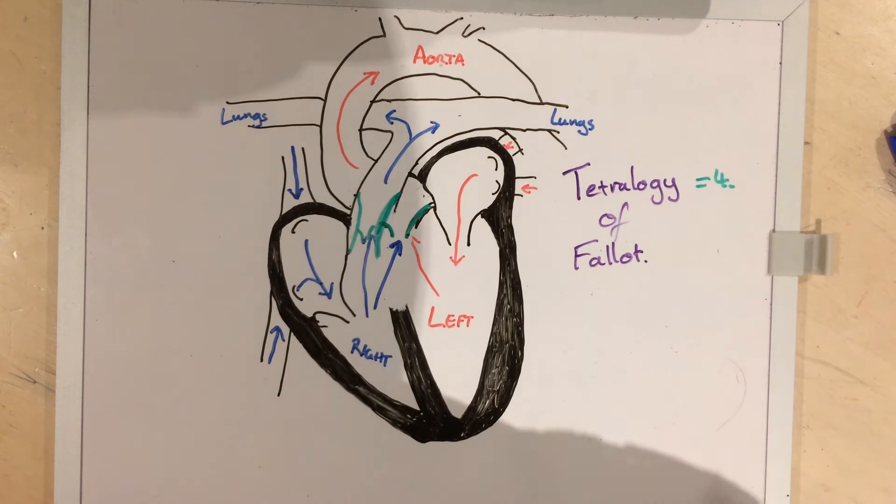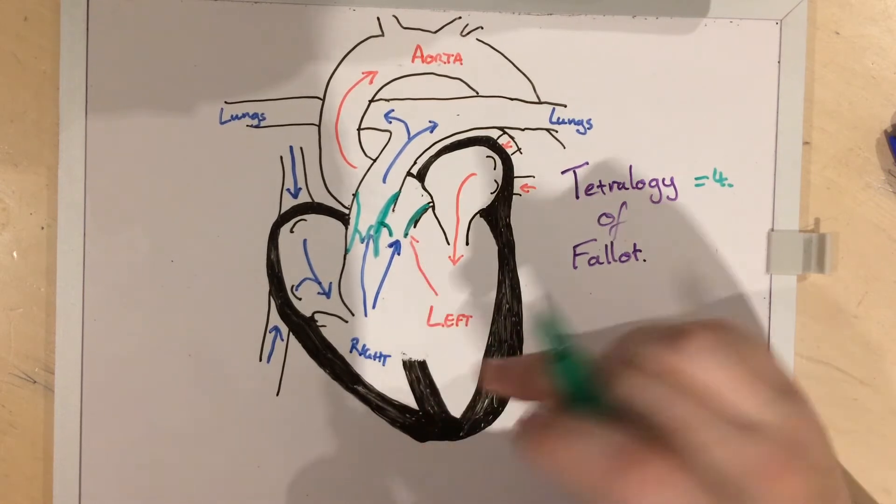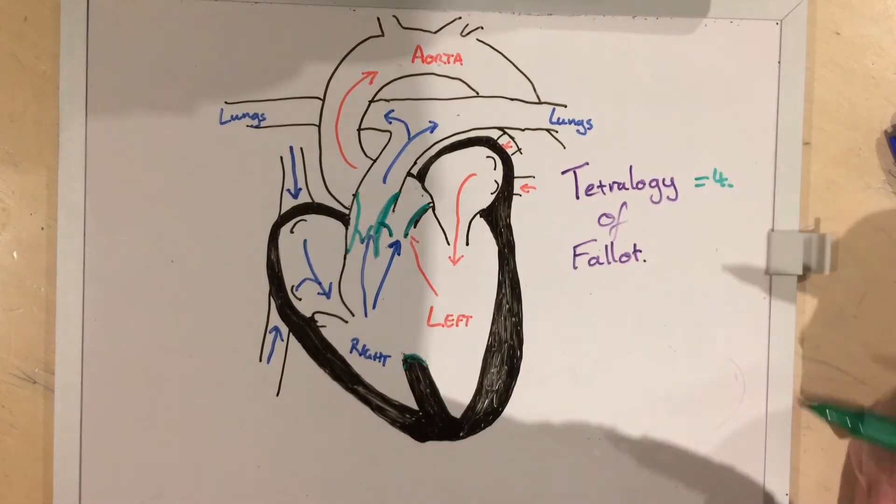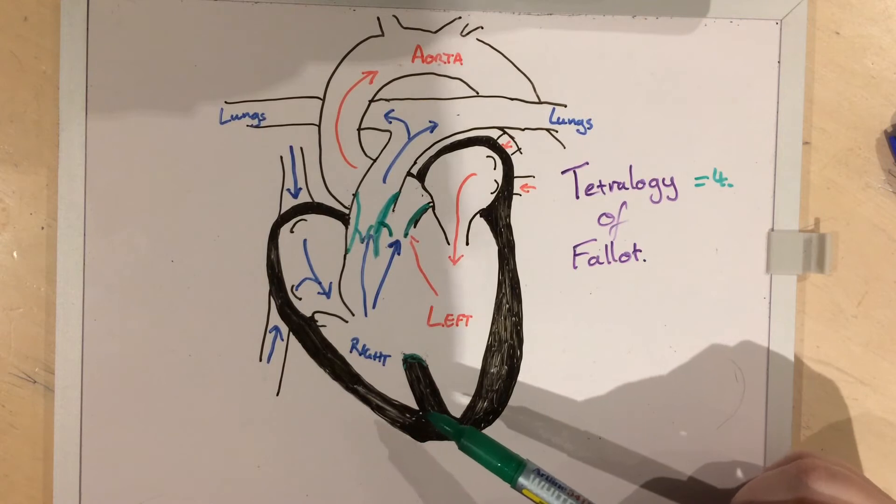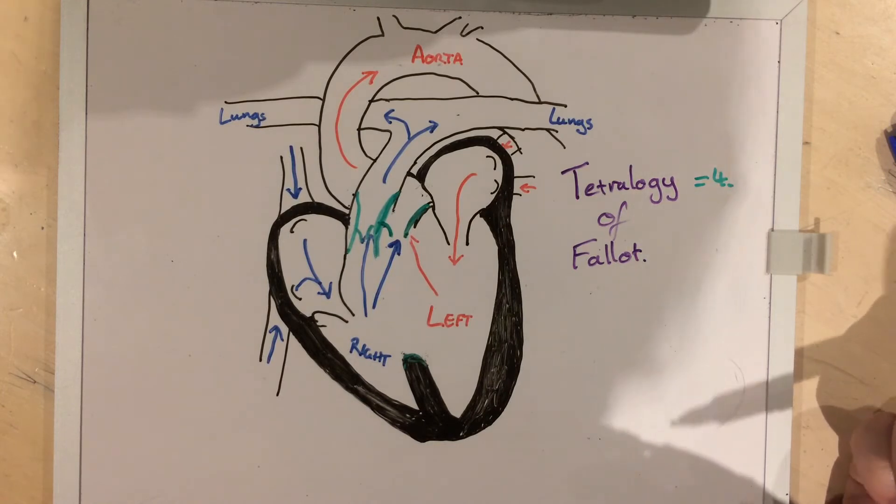They also have a ventricular septal defect, which varies in its location and how big it is. And that is essentially a great big hole between the left and right ventricles of the heart. This allows deoxygenated and oxygenated blood from different sides of the heart to mix and both go down the aorta, which is incredibly inefficient.